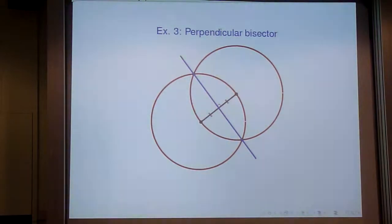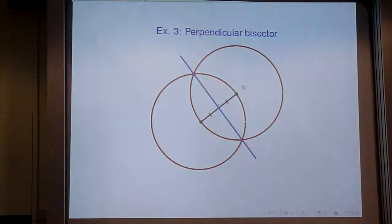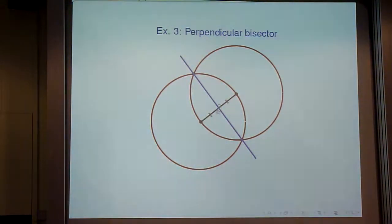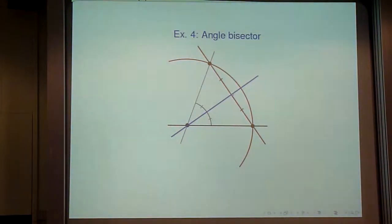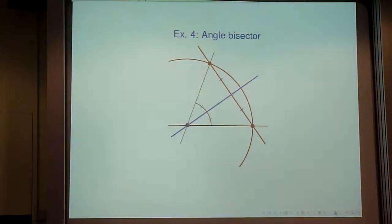You can also construct the perpendicular bisector of a line segment. You take your line segment, form two circles — the circle with one endpoint as center passing through the other, and vice versa. These two circles intersect in two points. Drawing the straight line connecting those two points gives the perpendicular bisector of the original segment.